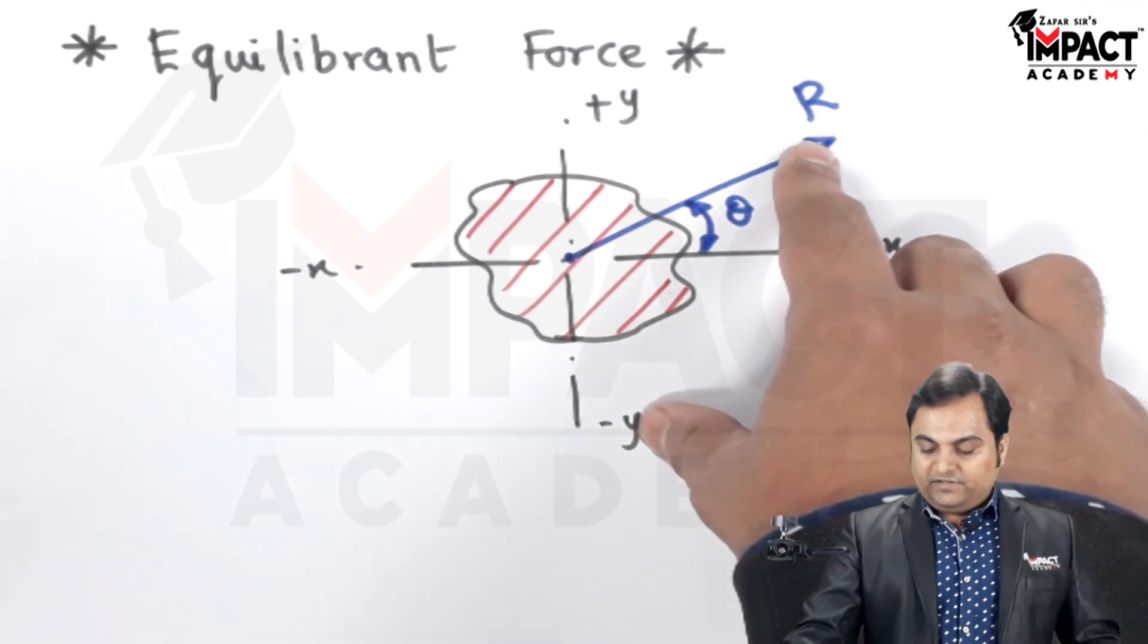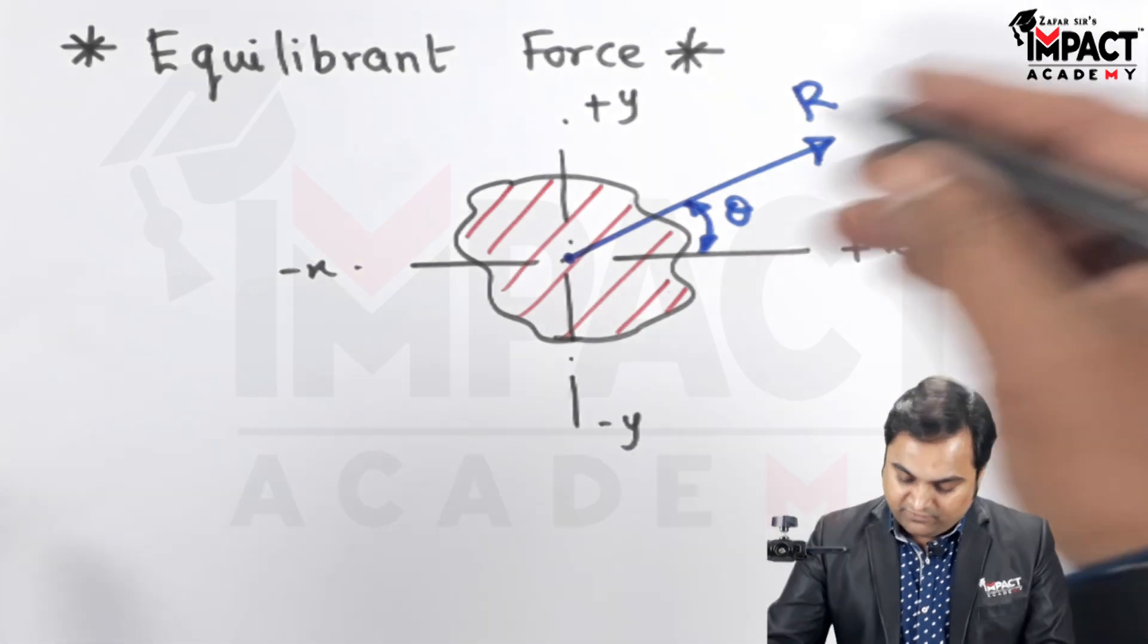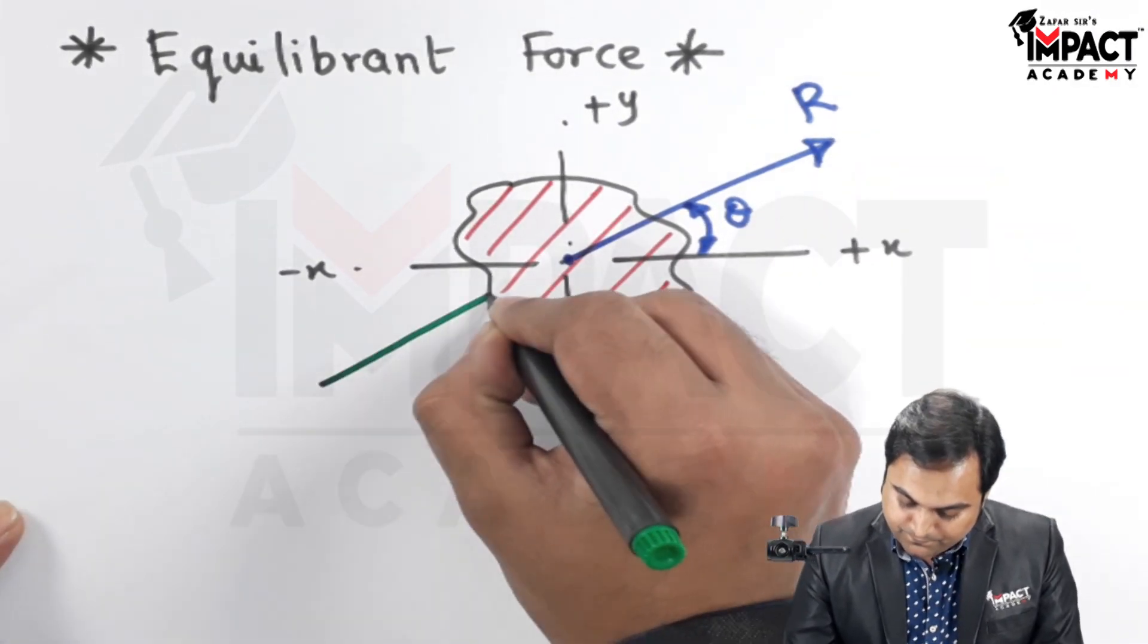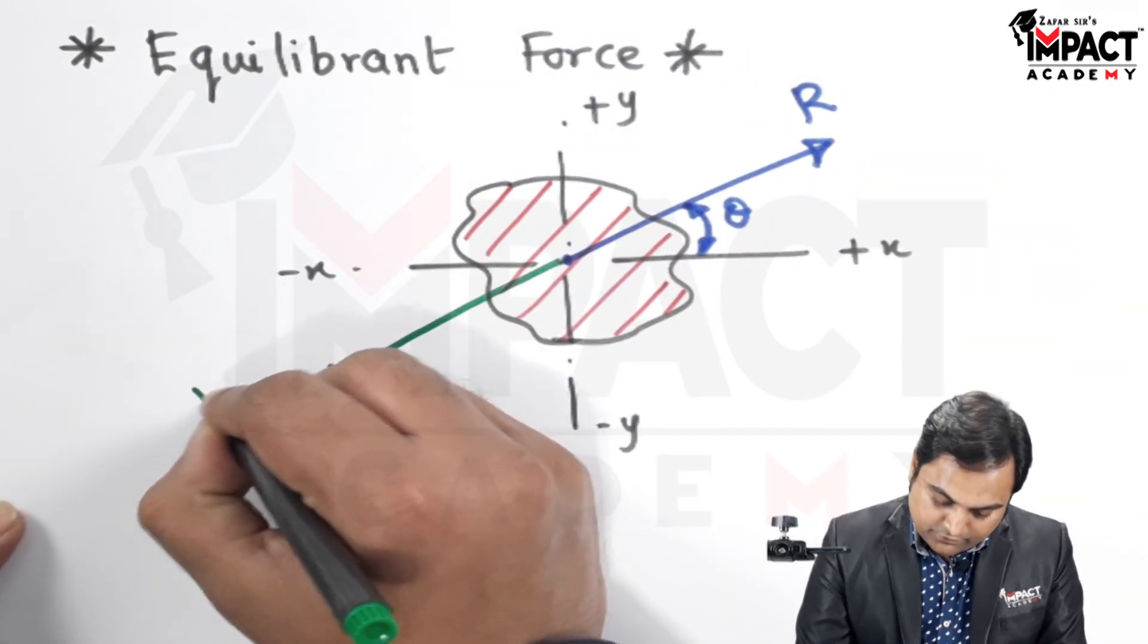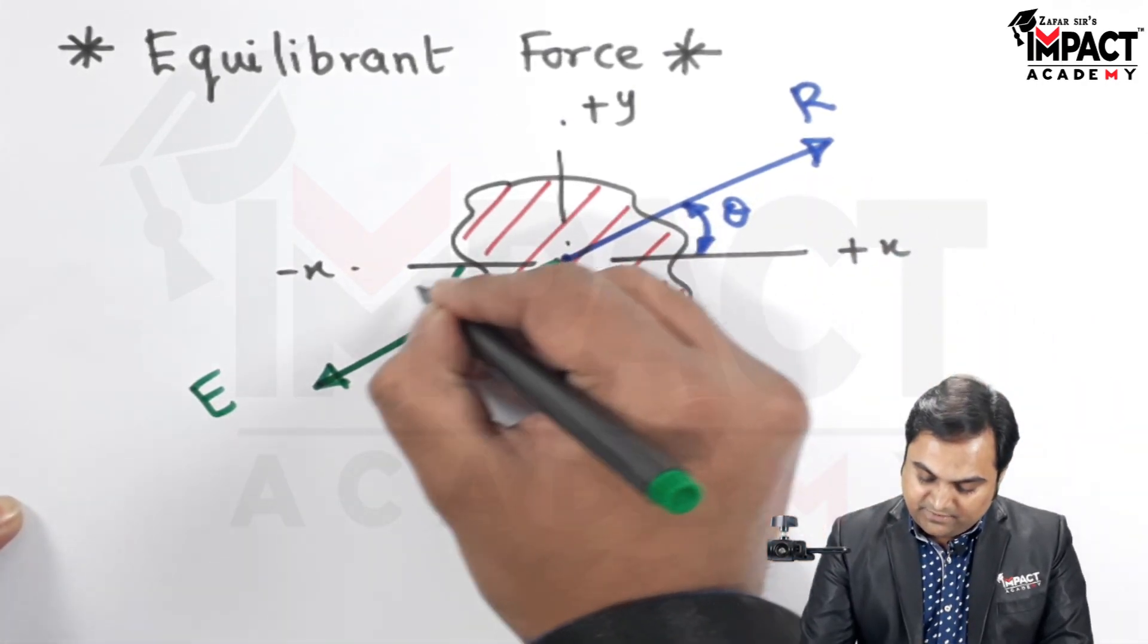So here we can see that the resultant is a disturbing force and along its same line of action if we are having one more force denoted by capital E acting at say the same angle of theta but in the opposite direction.